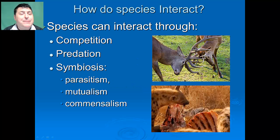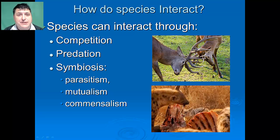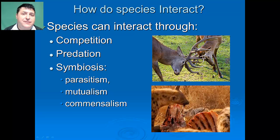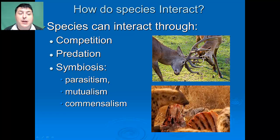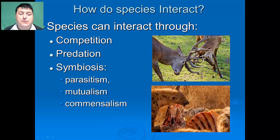Communities are made up of populations of different species living together. As a result, they're inevitably going to interact. Ecologists have identified five basic ways that living things interact with each other in their environments. Those include competition, predation, and three forms of symbiosis.